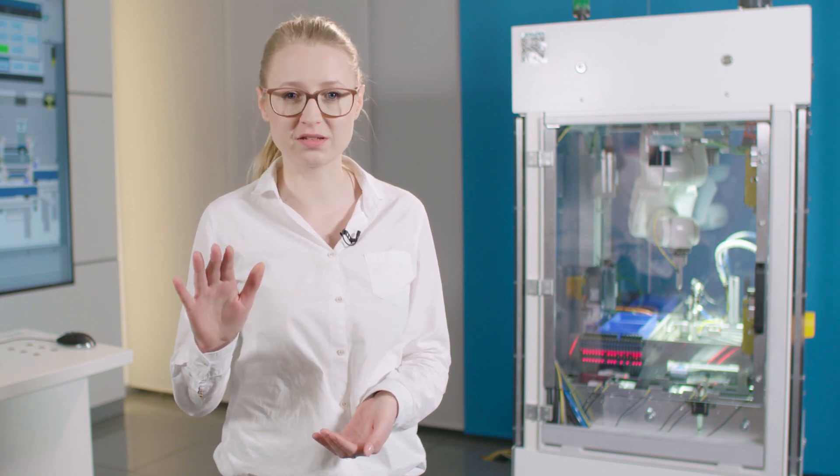machines must be flexibly scalable at all times since application requirements are constantly increasing. The scalable SIMATIC and SINAMICS portfolio makes it easier to implement increasing application requirements regarding motion control functionalities. For example, existing program code can be easily transferred from S7-1500 to the S7-1500T CPU and seamlessly extended with advanced motion control functions.